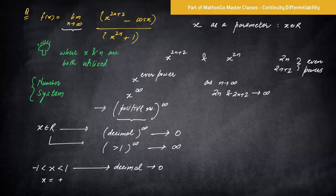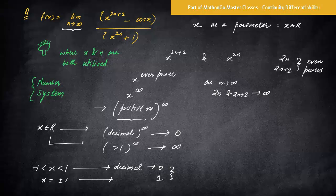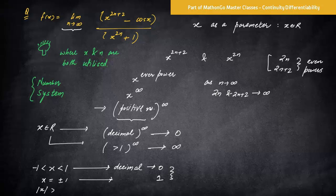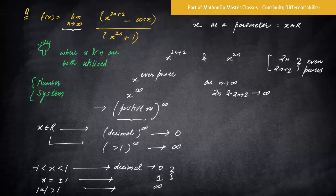If x is equal to plus minus 1, the answer would lead to only 1. Why only 1? Why not minus 1? Because the powers are even. And the third is if mod x is greater than 1, that is greater than 1, less than minus 1, answer is tending towards infinity. So actually, these are three bifurcations based on the values of x.